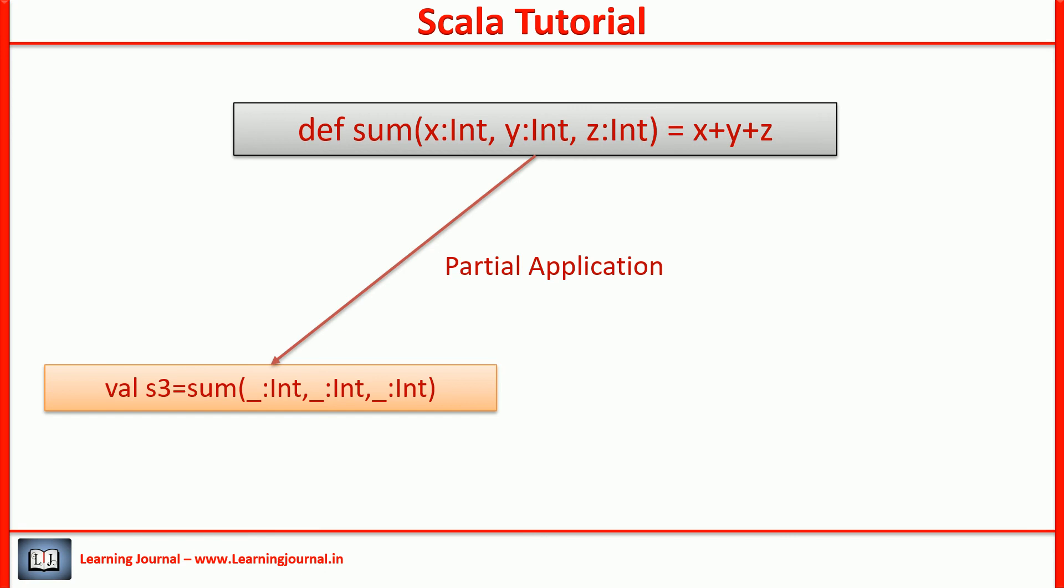We convert a function definition to a function value quite often. So, Scala offers a shortcut for skipping all the arguments. A single underscore without parenthesis is a placeholder for the entire parameter list. So, S4 and S3 are the same things. That's all about partially applied function.